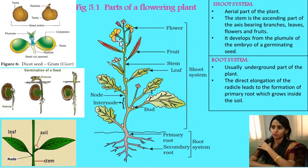Draw a neat labelled diagram of a flowering plant, or draw a neat labelled diagram of a typical dicotyledonous plant. This diagram can be asked for three marks, so you need to practice it. In the next video, we will be discussing in detail about the root system, types of roots and root modification. Thank you.